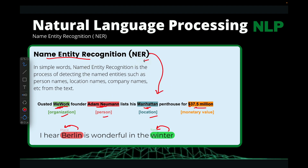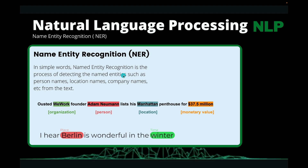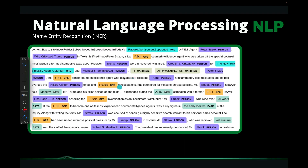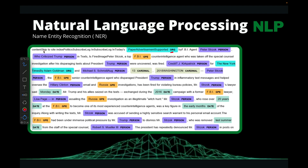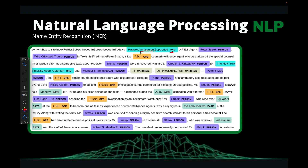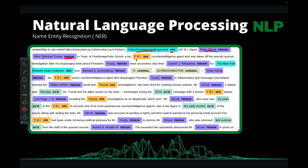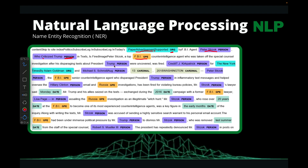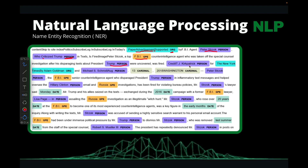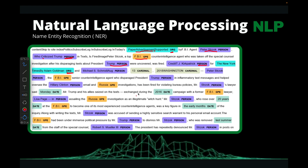Basically, that's what we use Named Entity Recognition models to do — to identify the various named entities or keywords in a document. Normally we say named entity, not keyword, but ideally it's just a keyword. It could be a huge document like this, and we'll be identifying the various named entities. For example, 'paper advertisement support' is an organization; it identifies another entry as a person, FBI as a geopolitical entity, Trump as a person, Kirkpatrick as a person, New York as a place.